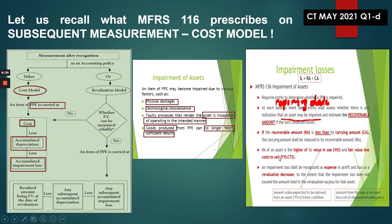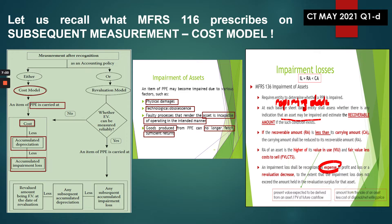The recoverable amount is given in our case — it is the higher between the value in use and the fair value less cost to sell. Impairment loss shall be recognized as an expense under the cost model, recognized directly in profit or loss. Under the revaluation model, it can be charged against the asset revaluation reserve, but our focus today is cost model, so the impairment will be recognized as an expense and reflected in the statement of profit or loss.